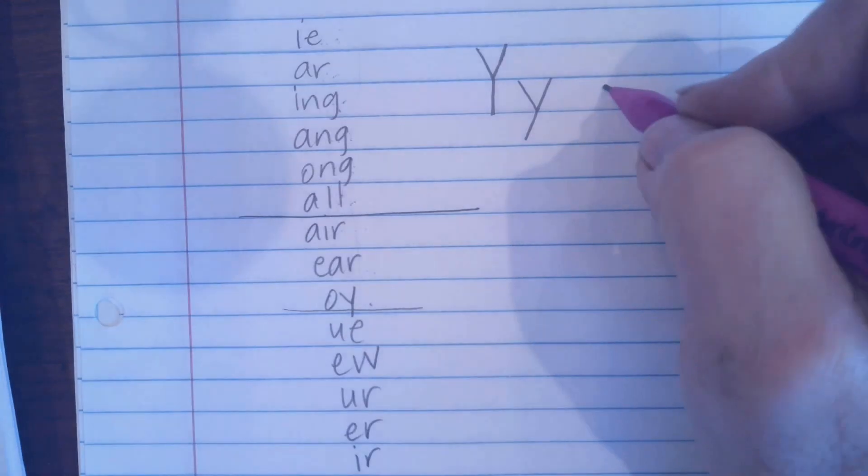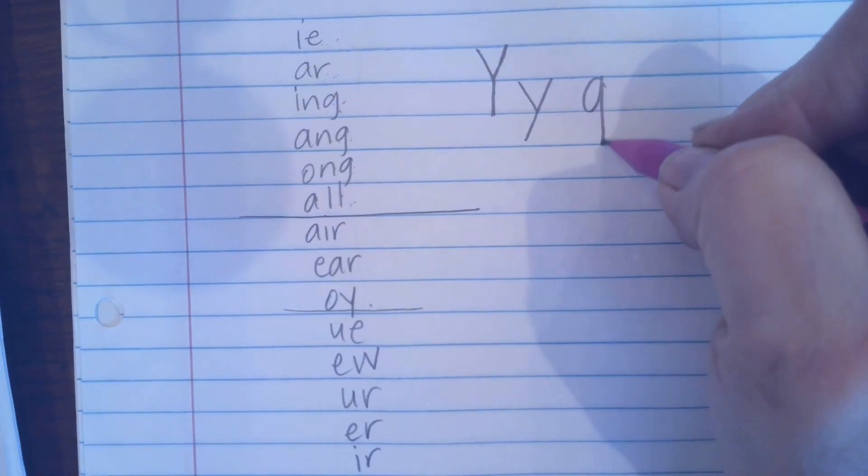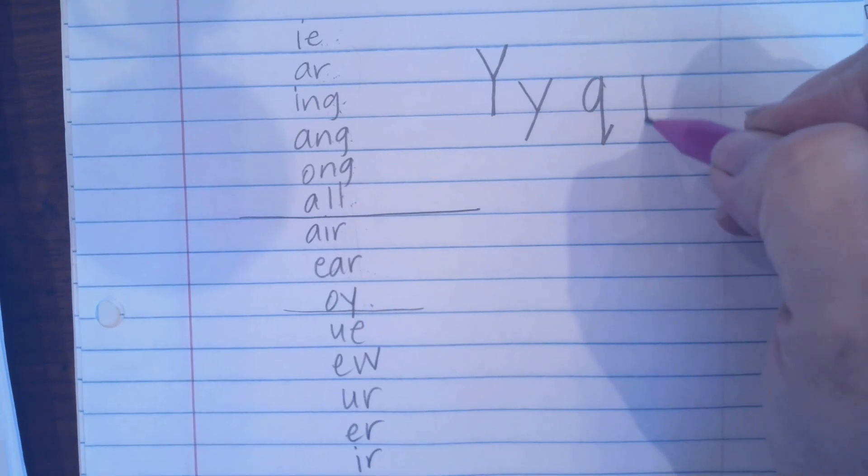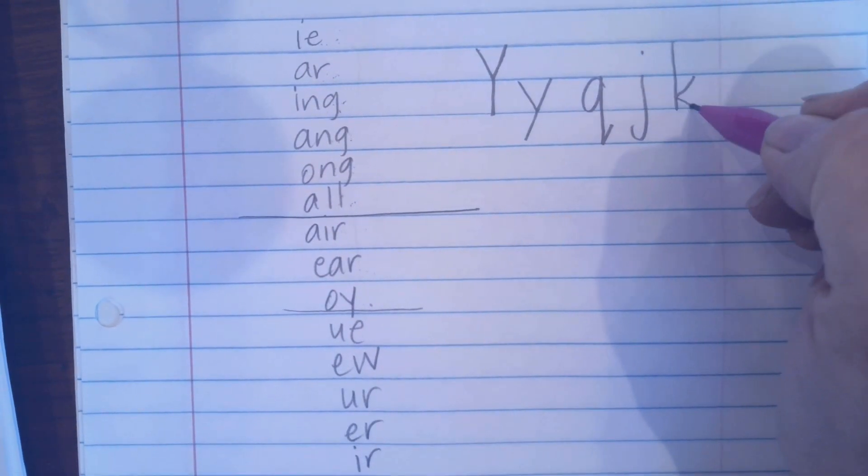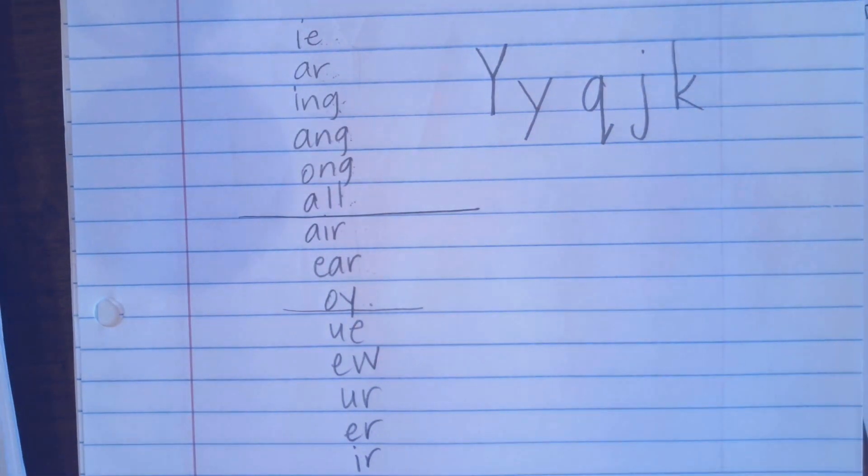Q. Lowercase Q looks like this. Lowercase J looks like this. Lowercase K looks like this. Are there any other letters that you want me to practice with you?